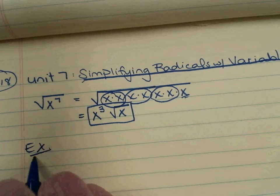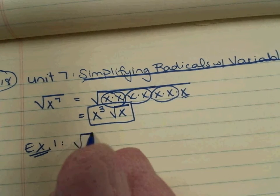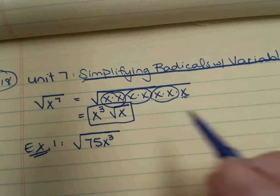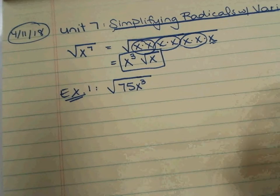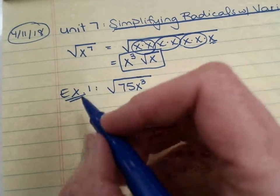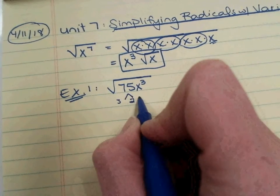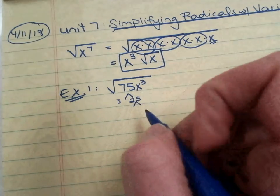Example 1 is the square root of 75 x cubed. So we take the square root of 75, similar to what we've been doing. We can break that into 3 and 25. That's okay.